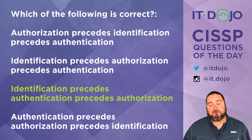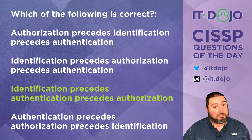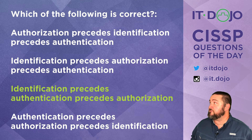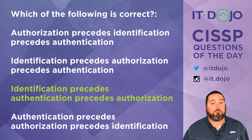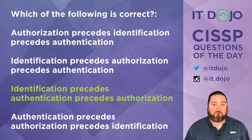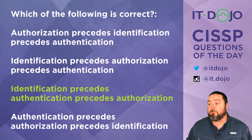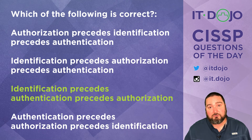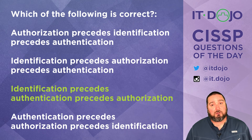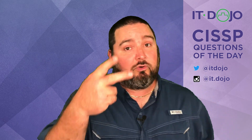You never — and I mean never — want a situation where this order gets messed up. You don't want authorization to come before authentication, and you don't want people to be authenticated without first identifying who they are. Identification precedes authentication, which precedes authorization — that's the right answer.